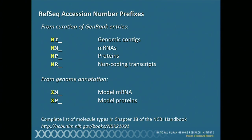Each entry in GenBank carries something called an accession number — in essence, that sequence's social security number. You can just put that in and you know you're going to get the same sequence back every time. They carry codes, and the way to tell the RefSeq entries from the rest is by looking for these prefixes. If you see NT, it's a genomic contig. If you see NM, it's an mRNA sequence. The P stands for protein. And NR means it's a non-coding transcript.